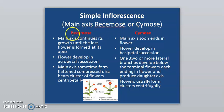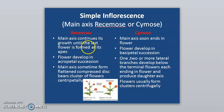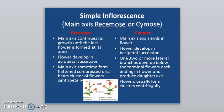In racimose type inflorescence, the main axis continues its growth until the last flower is formed at its apex. Flowers develop in acropetal succession, meaning the oldest flowers are towards the base of the inflorescence and the youngest ones are towards the apex.